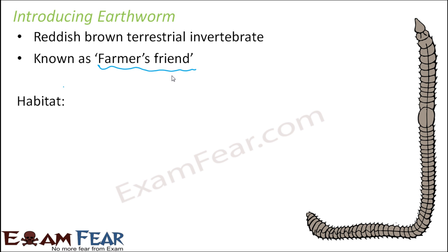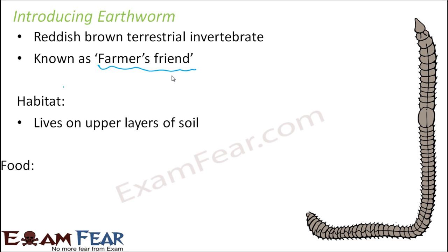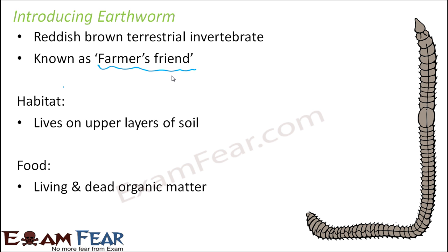Talking about habitat — where do they live? They live in the upper layers of soil; they burrow and live there. That's why mostly in garden areas where you have damp soil you will see a lot of earthworms. As for food, they eat anything — living or dead organic matter — and they get all these things generally from the soil.